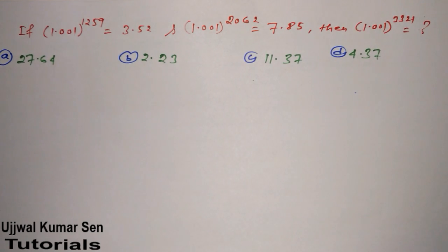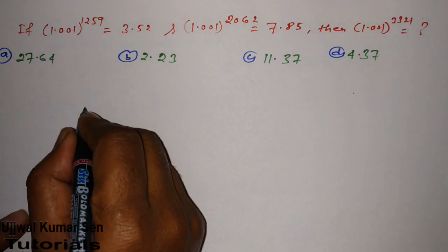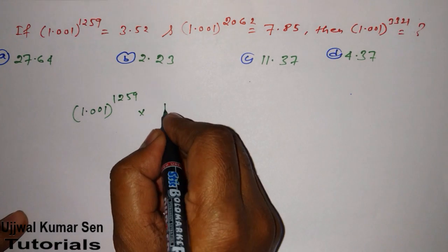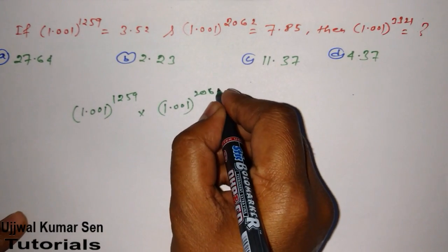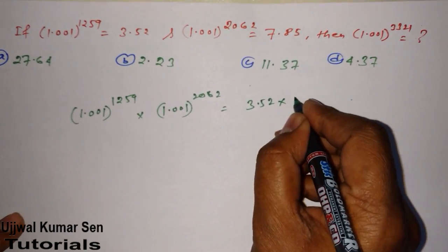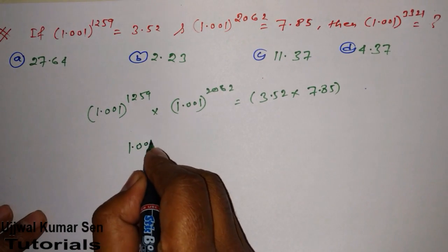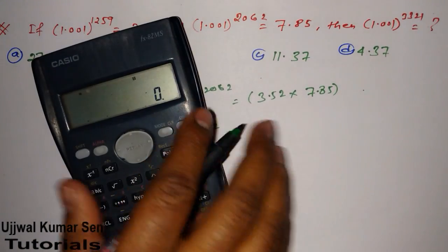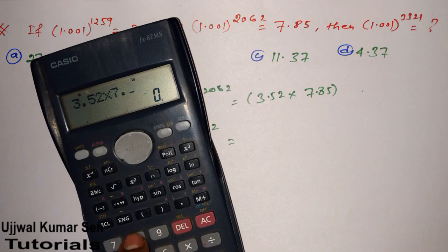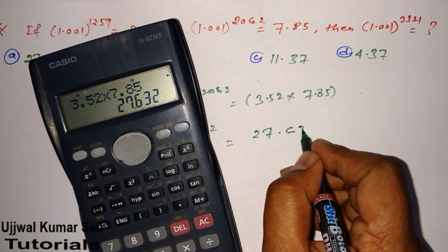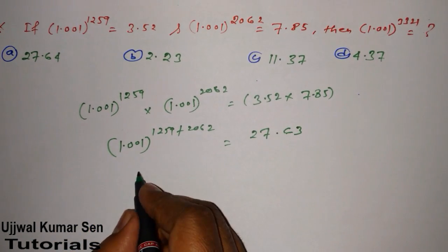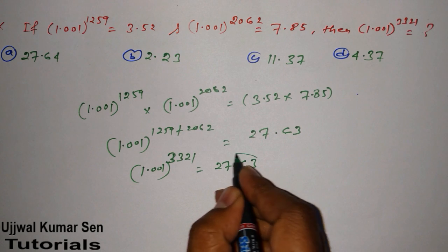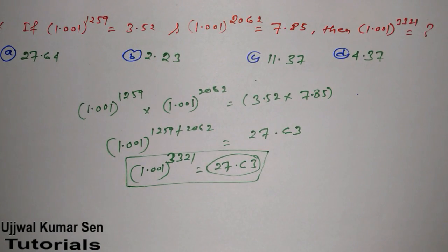That means the approach is absolutely right: 1.001^1259 multiplied by 1.001^2062 equals 1.001^3321, which equals 3.52 multiplied by 7.85. Now 3.52 × 7.85 is equal to 27.63. So the answer becomes 27.63.